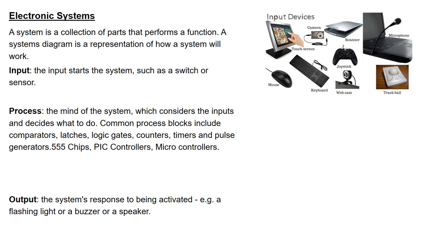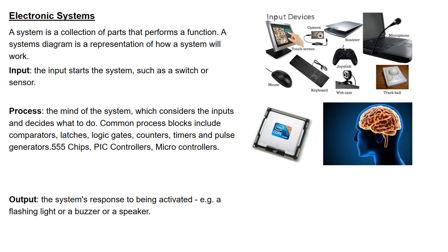The process, or processor, is the brain of the system — it considers the inputs and decides what to do. Common processes include comparators, latches, logic gates, counters, timers, pulse generators, 555 chips, PIC controllers, and microcontrollers. All of those you'll learn about in more detail in future lessons, but basically they're different things that pick up and process the input signal and convert it into an output.